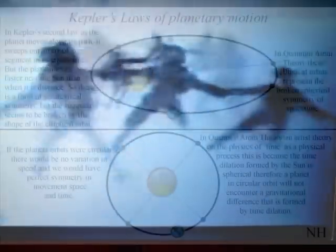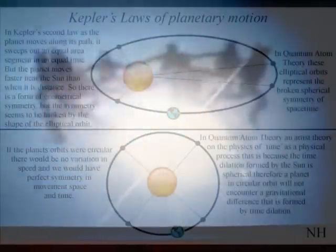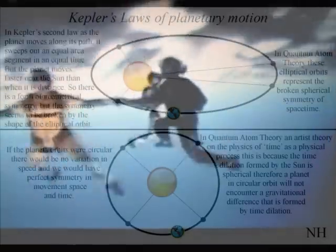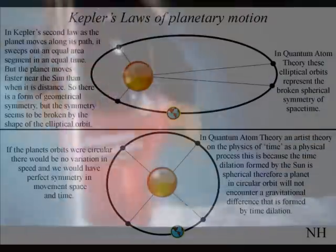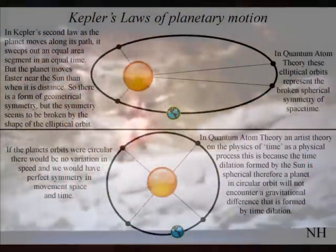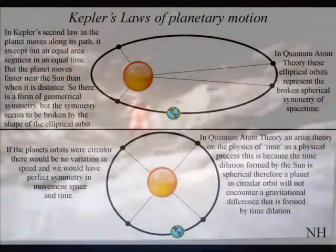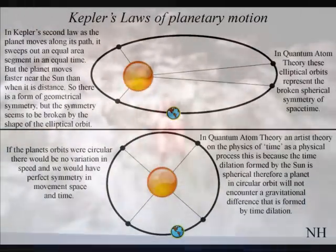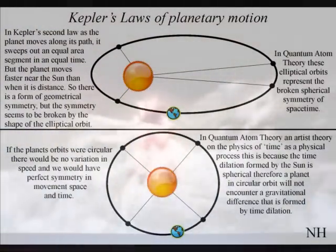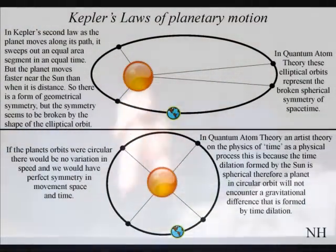The broken symmetry of this process can be seen in the motion of the planets with the elliptical orbits of Kepler's laws of planetary motion. As a mystic Kepler believed the underlying structure of the universe was built from perfect geometric forms. But what he found was elliptical orbits that sweep out equal areas in equal times as the planets orbit the sun. In this theory these elliptical orbits represent the broken symmetry of space-time.